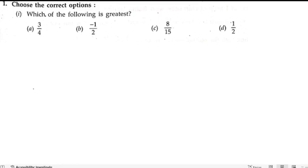First problem: choose the correct option. Which of the following is greatest? So here we need to find out which one is the greatest. To find that, we need to take out their LCM. Since we are having 3/4, -1/2, 8/15, and 1/2, the denominators are 2, 4, and 15. So let us take out the LCM of that.